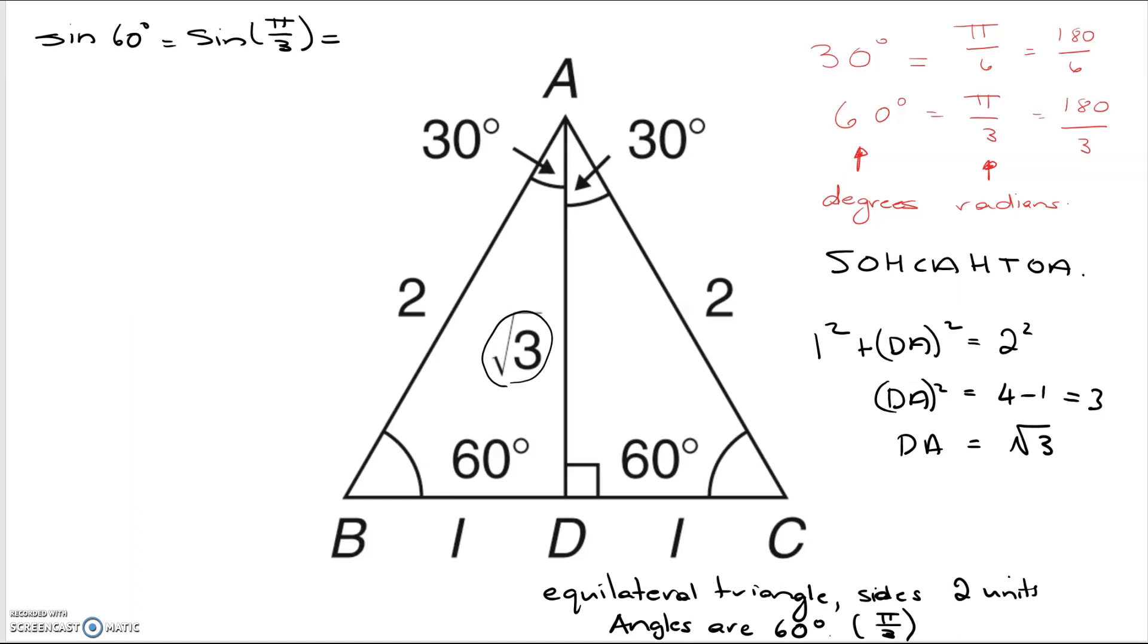So sine is opposite over hypotenuse, which gives us root 3 over 2. Now, obviously, if you use your calculator to look up that, it gives you 0.866.